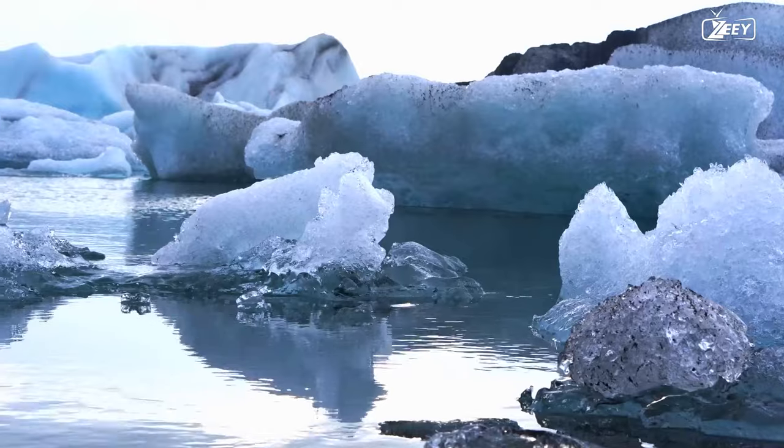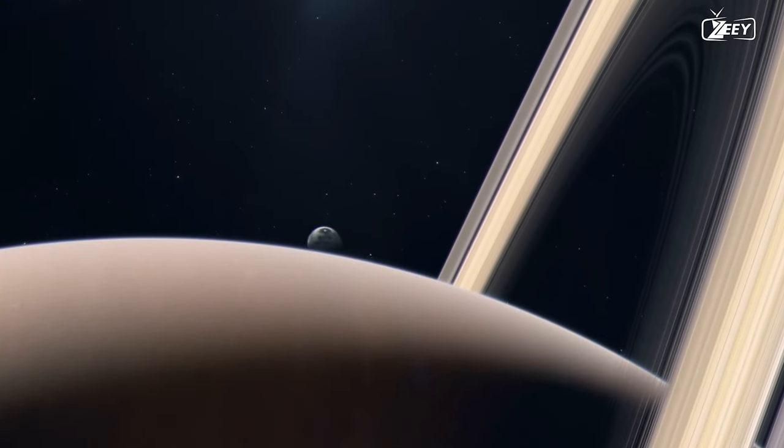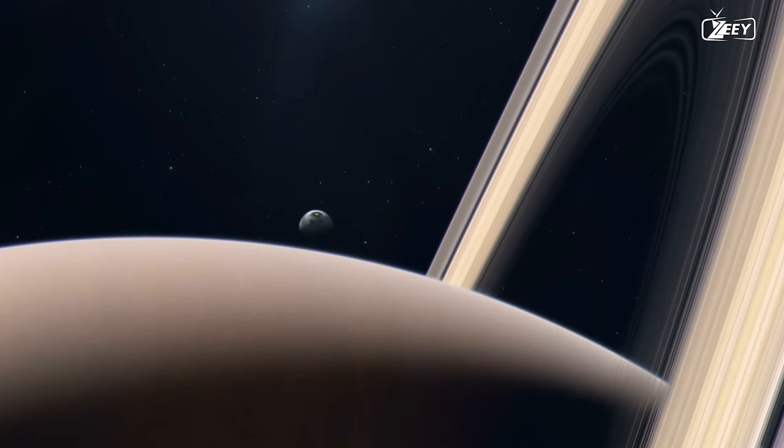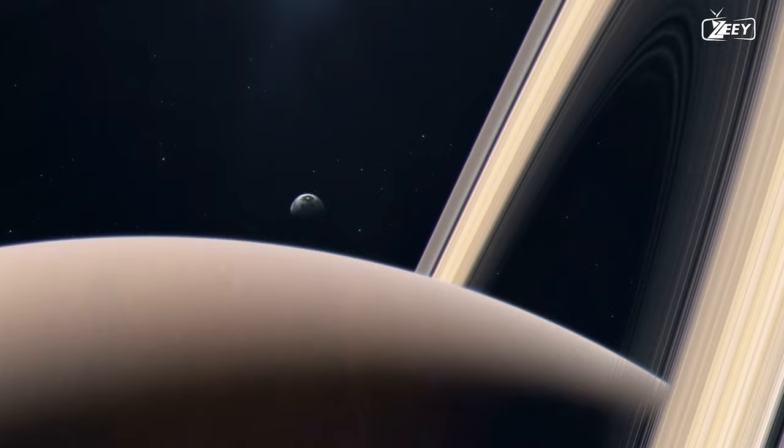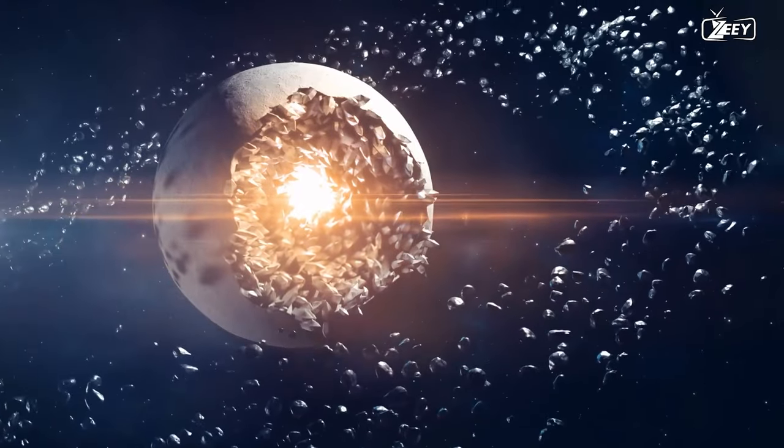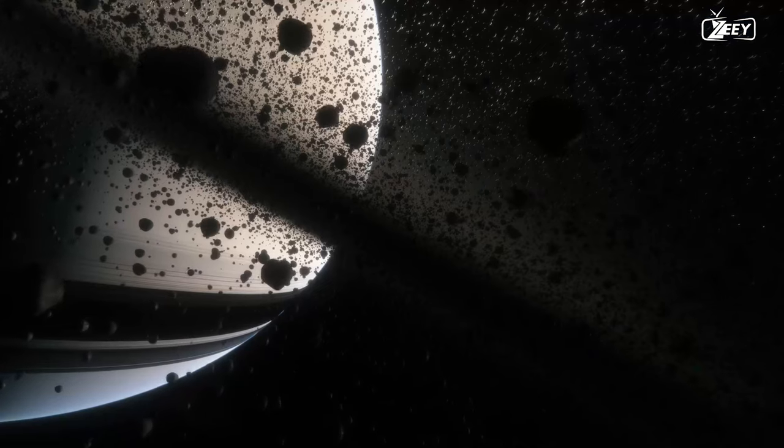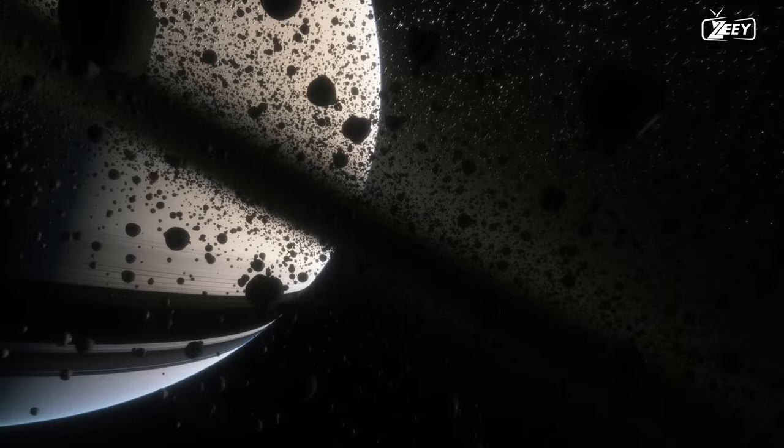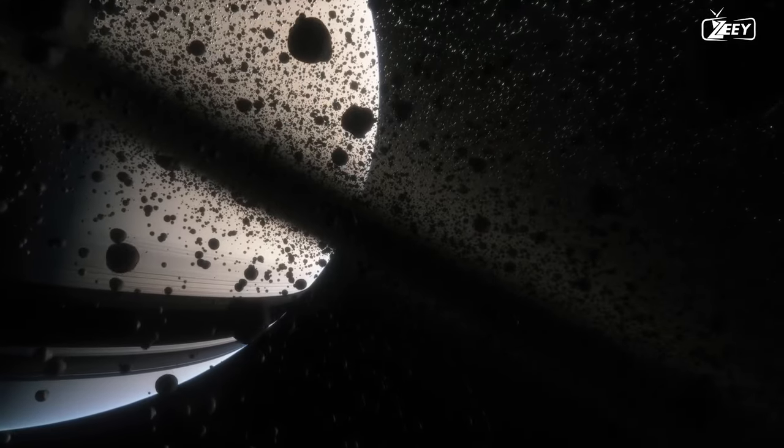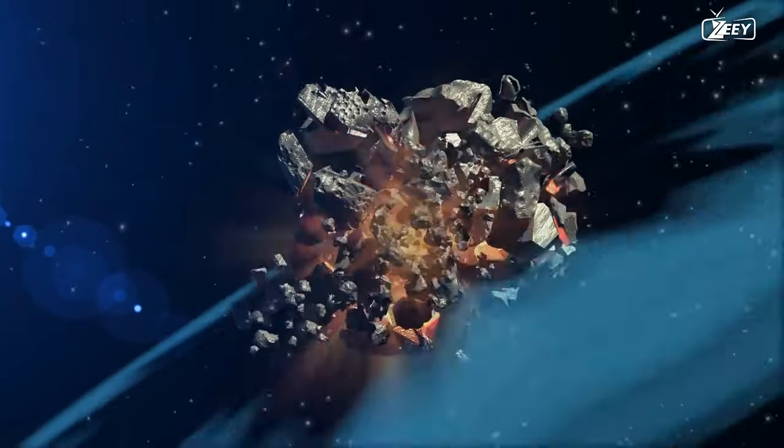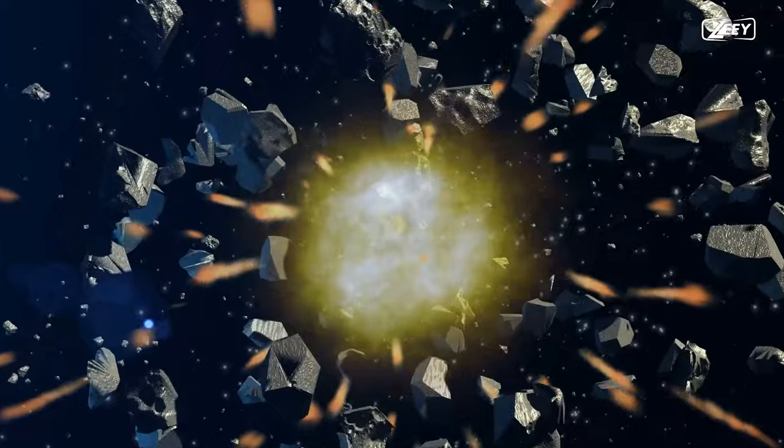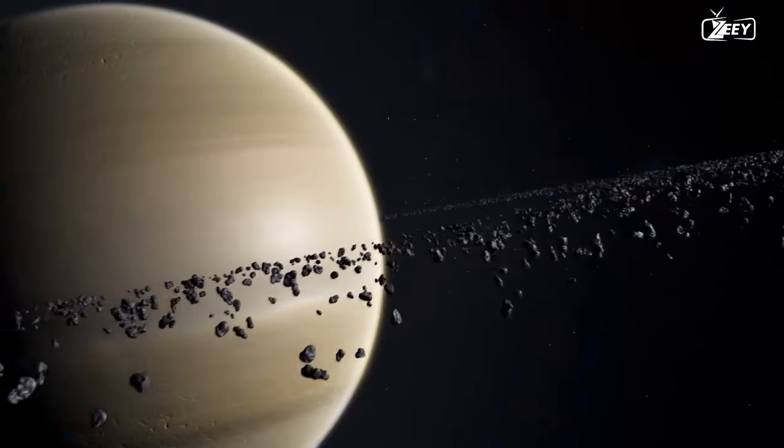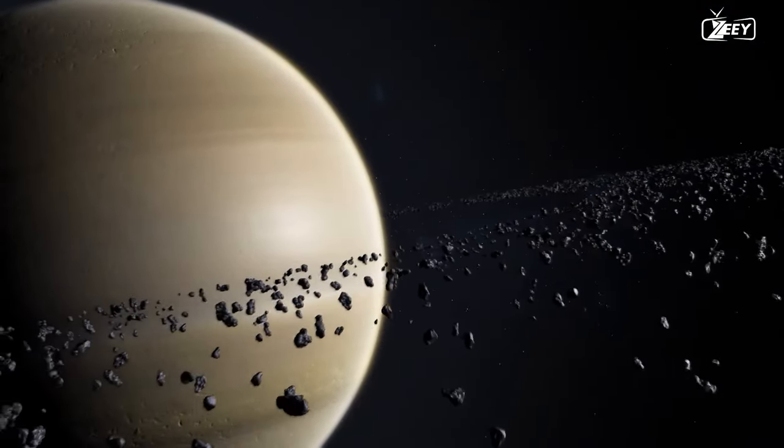These moons are predominantly composed of water ice and rock, rendering them relatively lightweight. The parent moon's orbit around Saturn would have been unstable due to gravitational interaction with the planet's other moons until it was annihilated by Saturn's gravity. The resulting fragments were eventually left in a secure orbit around Saturn. Over time, these fragments collided and fragmented into ever smaller particles, eventually forming the asteroid ring we observe today.